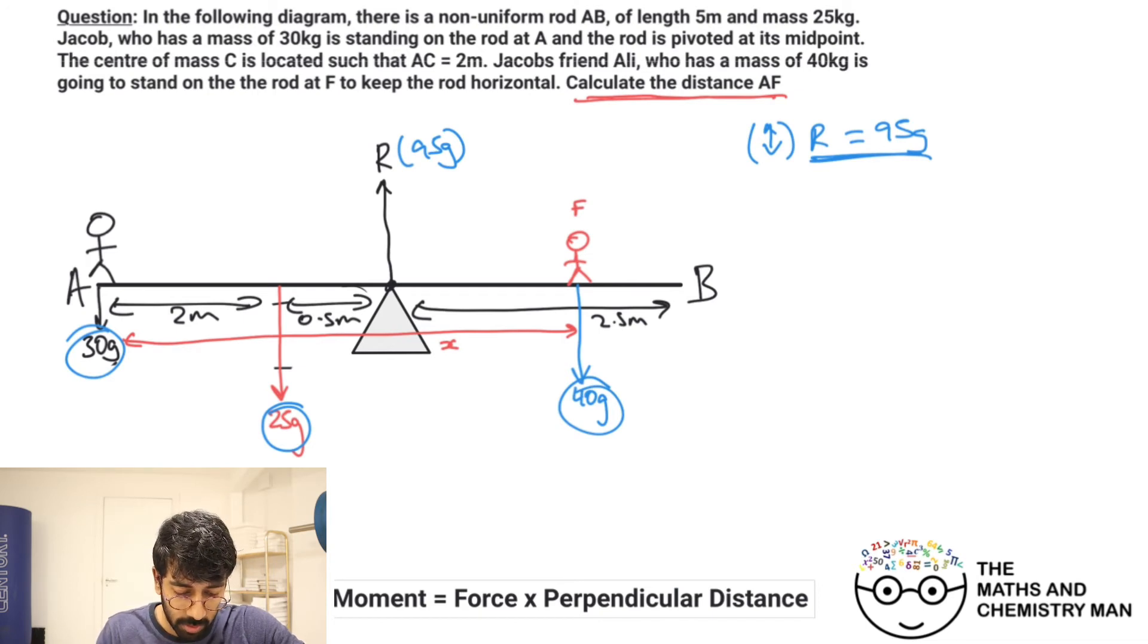Next thing we need to do is take some moments. I'm going to take moments about A. If we are taking moments about A, we don't need to include this force down here because it goes through this point and its perpendicular distance is zero. Hopefully you remember that from the previous videos.